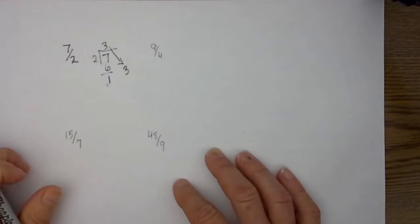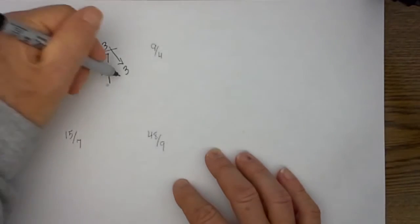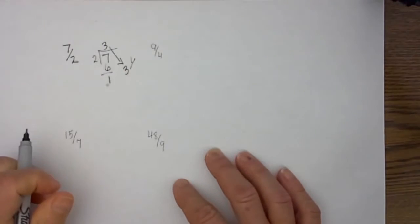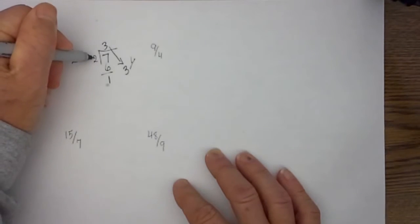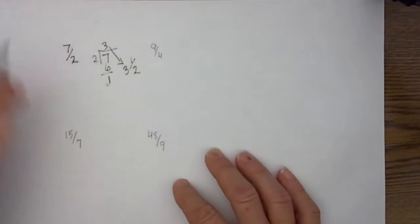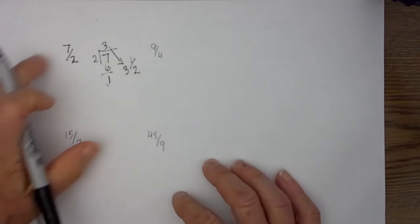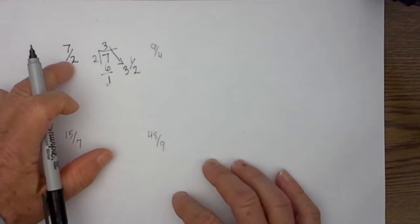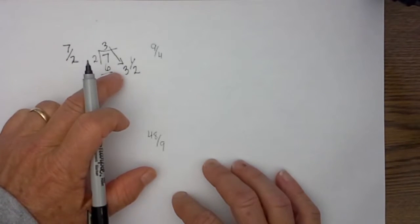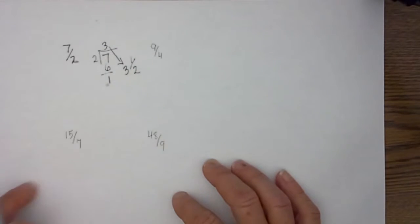And then all I do is I move this number over here. That becomes your whole number. And then I move this number and it becomes the numerator. And the number on the outside becomes the denominator. So 7 halves becomes a mixed fraction of 3 and a half.